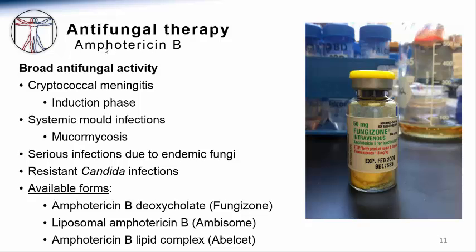Despite its toxicity, amphotericin B is still used widely today. Its broad antifungal activity makes it acceptable therapy for many life-threatening fungal infections. It is absolutely indicated for the treatment induction phase of meningitis due to Cryptococcus neoformans, as well as for infections due to invasive molds, especially mucormycosis. The Mucorales molds are only susceptible to very high doses of amphotericin B products, and generally not to other antifungal compounds. Endemic fungi such as Histoplasma, Blastomyces, and Coccidioides are also often treated with amphotericin B products.